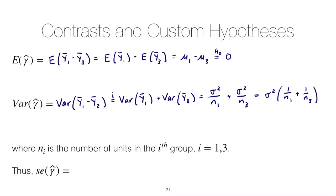Now from there, the standard error, which shows up in the test statistic, is just the square root of that. So we can write that down as sigma times 1 over n1 plus 1 over n3 raised to the one-half.